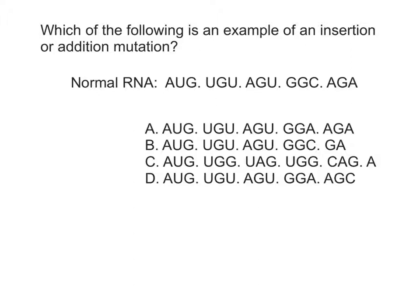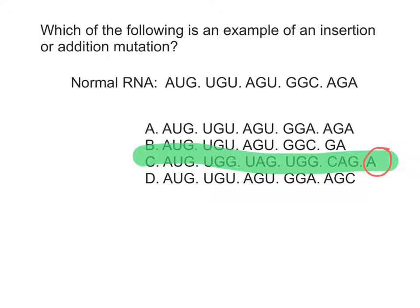Let's take a moment to review. Which of the following is an example of an insertion or addition mutation? Read the normal RNA strand and look for the option that has an insertion. Answer C is the correct answer. We can tell this easily because there is an extra letter sticking off at the end. Because this segment of RNA is not the same length as the normal RNA, we know that one nucleotide has been added.